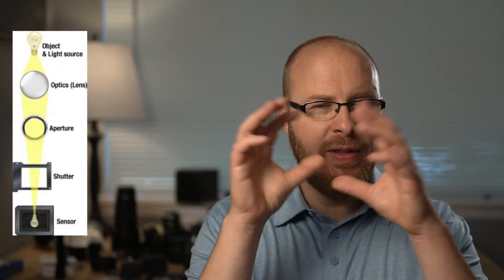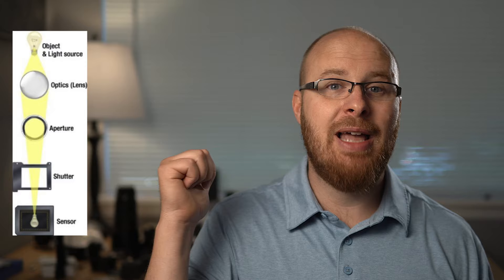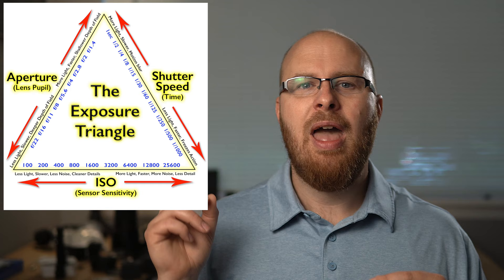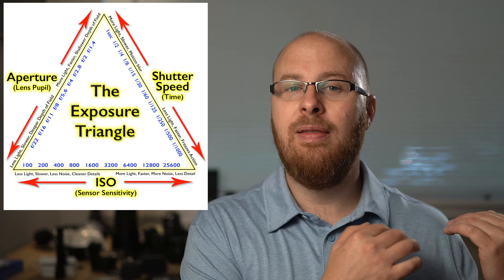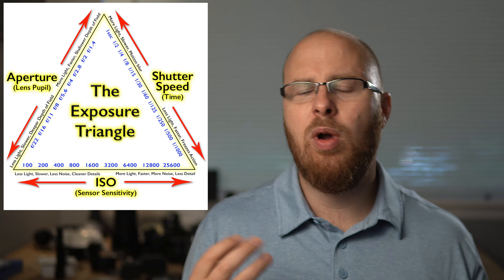To reverse that — if someone is running toward you in sports and you want to freeze the action — you want a really fast shutter, like 1/500th of a second. The shutter opens and closes extremely fast, exposing the sensor for only 1/500th of a second, so the subject is frozen. I'm going to demonstrate that in the lab scene I have set up. I want to explain the exposure triangle first so that when I show you in the lab, those pieces fall into place.